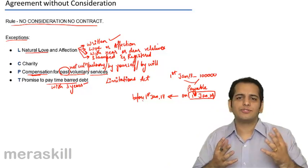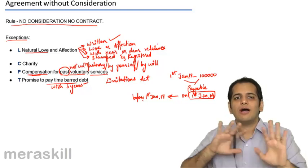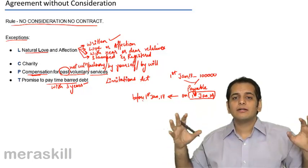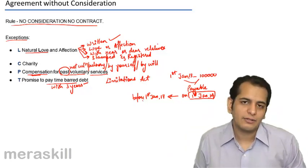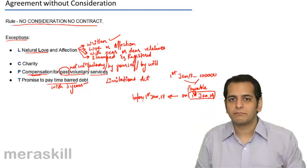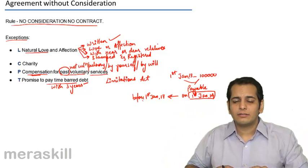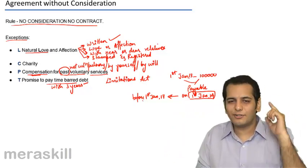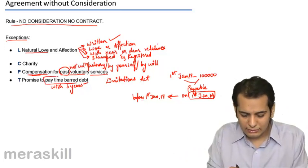So what do you think is my position in this case? My position is, now I become debt free. Now nobody can enforce or impose on me that I have to pay 1 lakh to you, the loan which you had given me. So the debtor becomes debt free. And such a debt of which the debtor has become free because the creditor did not take legal action within 3 years, such a debt is called time barred debt. It's called time barred debt.